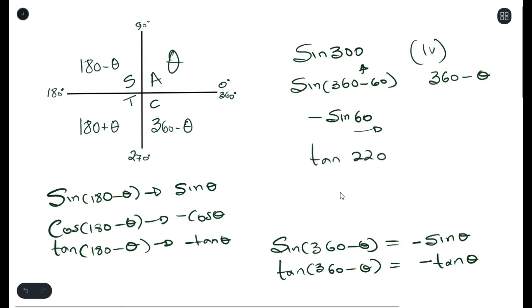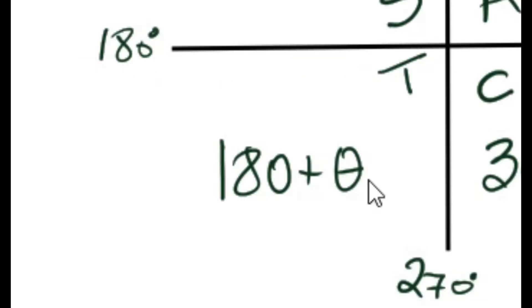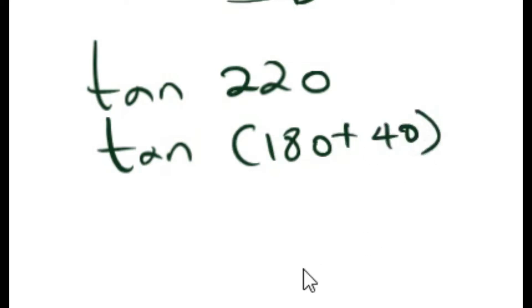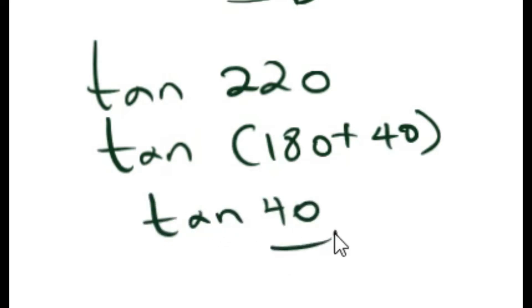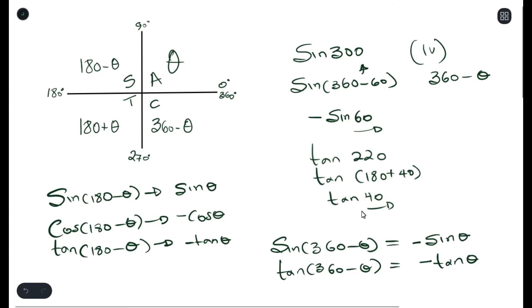Tan 220: now 220 falls in the third quadrant because it falls between 180 and 270. We rewrite 220 using the equation of the third quadrant. Then we assign a sign — since tan is positive in the third quadrant, this is simply written as tan 40.